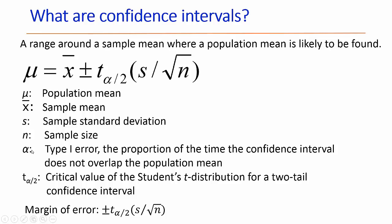Alpha is the type 1 error, that's the proportion of the time the confidence interval does not overlap the population mean. Then we have t alpha divided by 2, that is the critical value of student t distribution for a two-tail confidence interval. This term plus or minus t times s divided by the square root of n collectively is known as the margin of error.